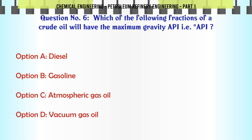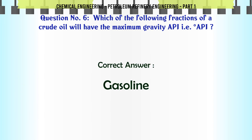Which of the following fractions of a crude oil will have the maximum gravity (degree API)? A. Diesel, B. Gasoline, C. Atmospheric gas oil, D. Vacuum gas oil. The correct answer is Gasoline.